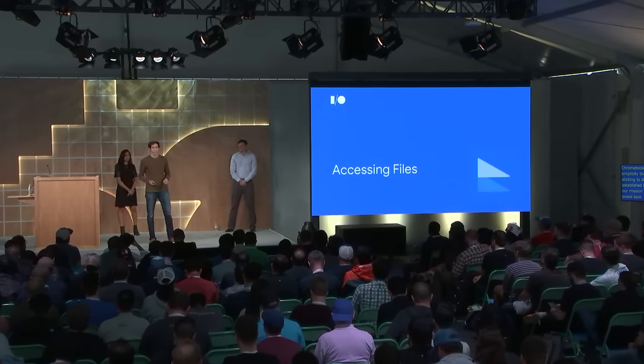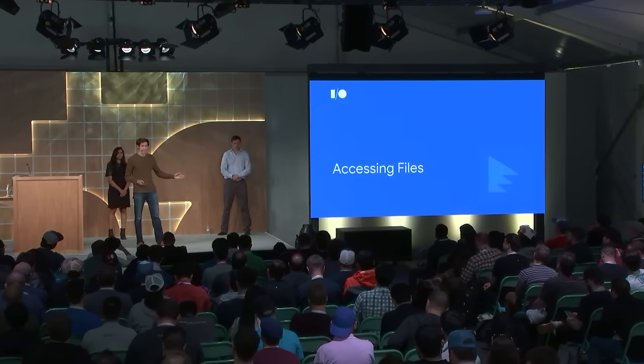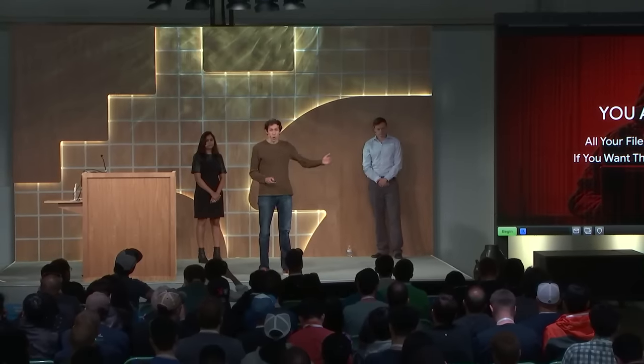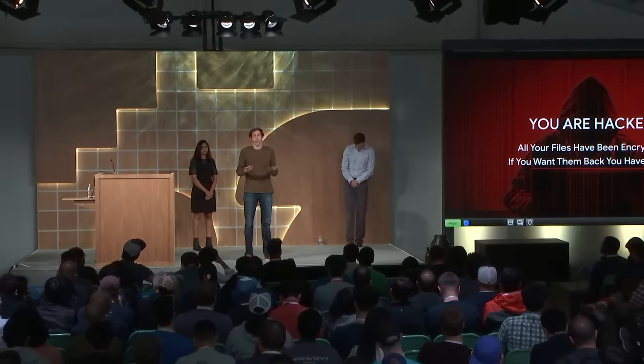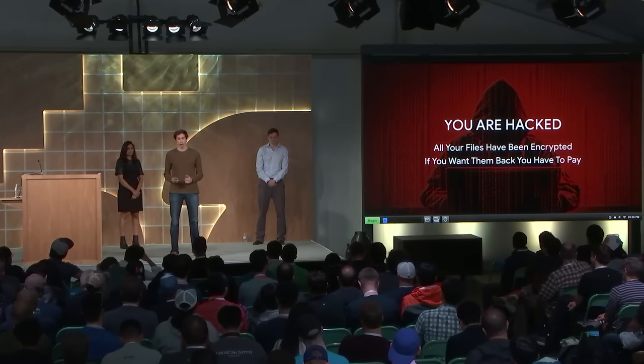Now we're going to talk about three common developer flows. The first is accessing files. As developers we have to do this all the time — editors, compilers, source control all need file access. But file systems have a lot more than just code: personal photos, tax returns, maybe a novel you've been working on. Ransomware can hold that data hostage, malware can upload your files to a random server, or something might just delete everything. We built Crostini with those threats in mind to limit what can go wrong.